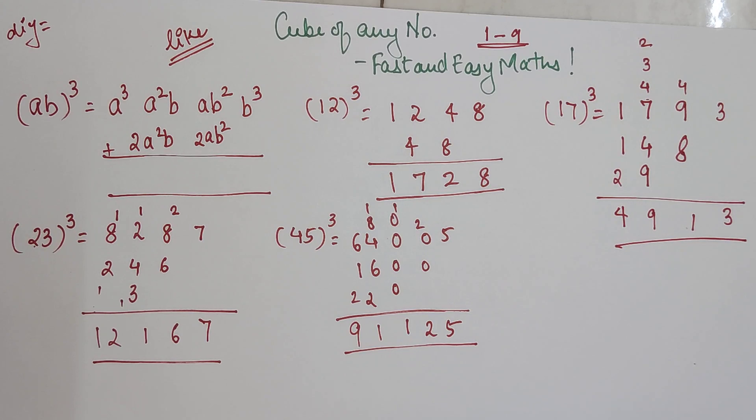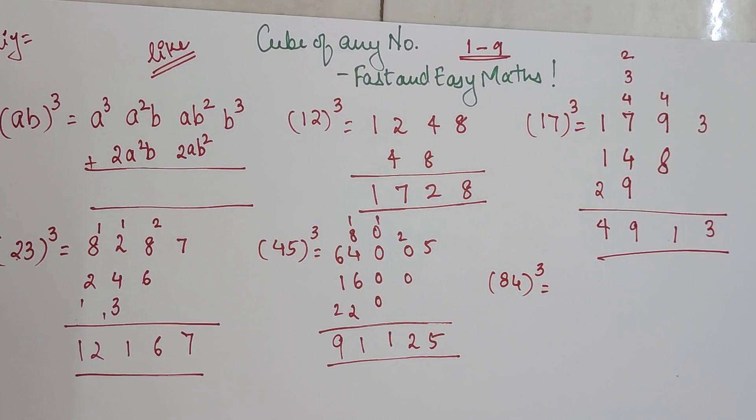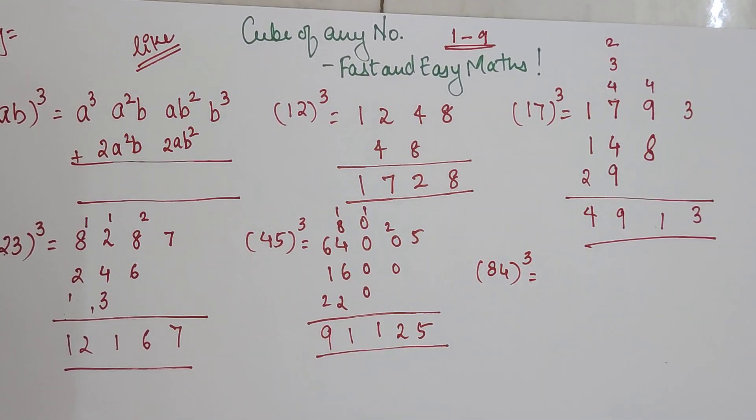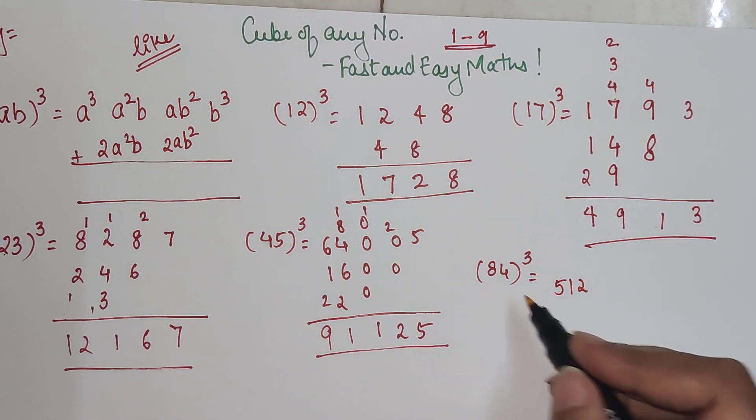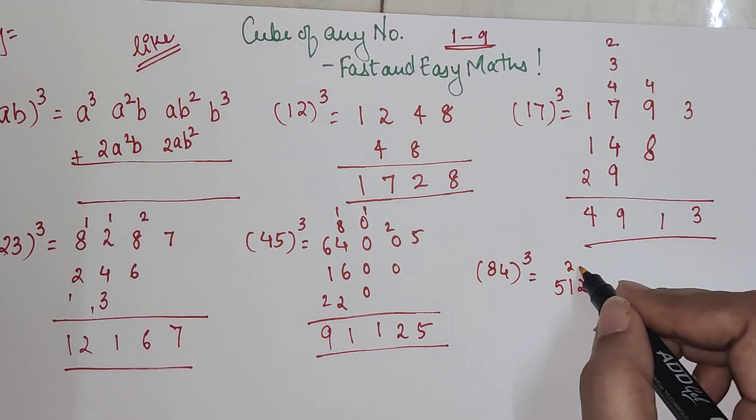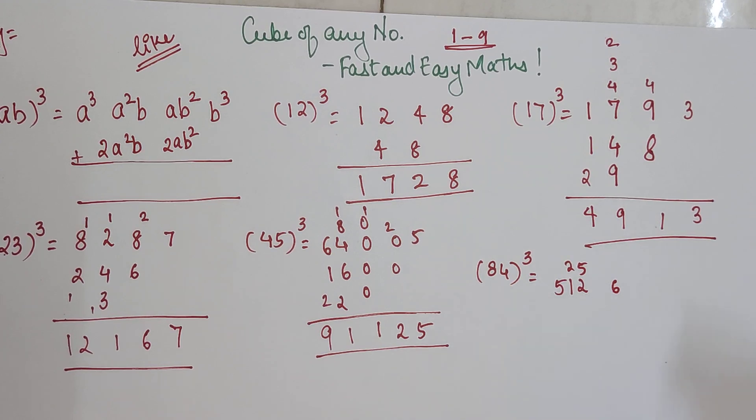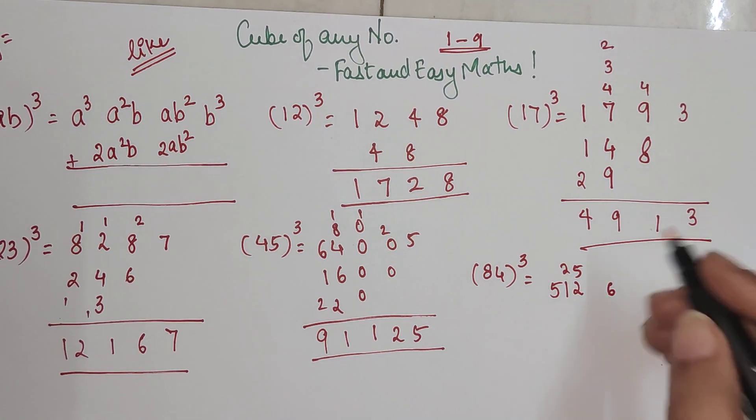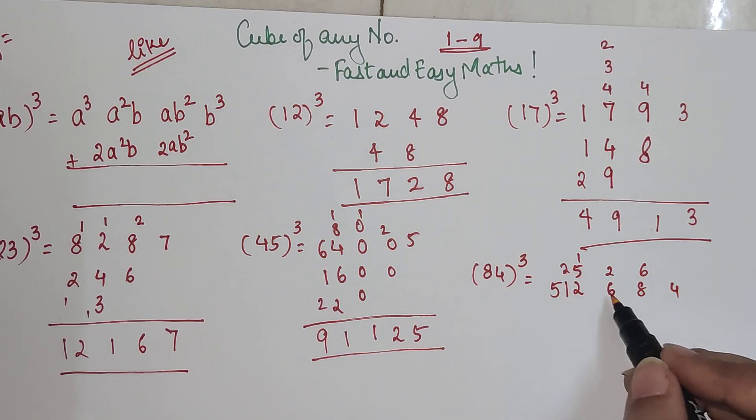Now I am going to do 84³. If you want, you can take a pause on this video and do it on your own and then scroll toward the end and check whether you are getting it right or not. So 8³ is 512, now 8² × 4 - 8² is 64, 64 × 4 gets you 256. Then 8 × 4² that is 16, 8 × 16 gets you 128.